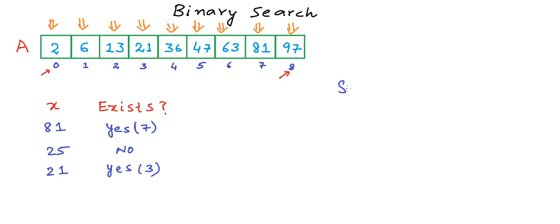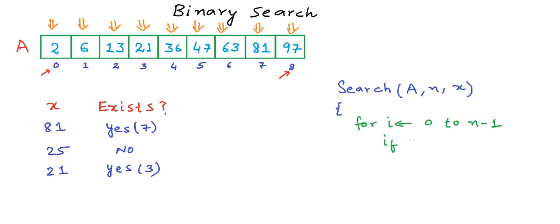If I have to write the code for this, it will be pretty straightforward. Let's say I want to write a method 'search' that takes an array A, its size n, and the number x to be searched for. The code would be: we run a loop starting 0 till n-1. For i starting 0 to n-1, if the element at index i is equal to x, then we return i, which means returning the position at which we found x. And if we cannot find any such i, then we return minus 1, meaning we could not find x in the array A.